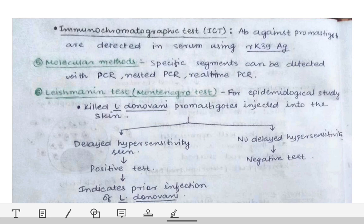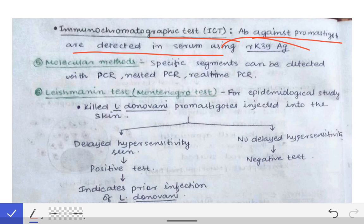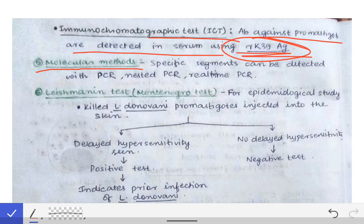Another antibody detection test is the Immunochromatographic Test (ICT), where antibodies against the promastigote are detected in serum using the RK39 antigen. Remember the RK39 antigen, as it is important for MCQs. Molecular methods including PCR, nested PCR, and real-time PCR can also be used for detection of Leishmania genes.